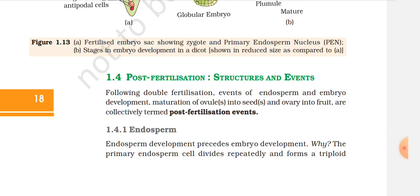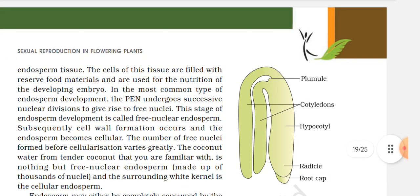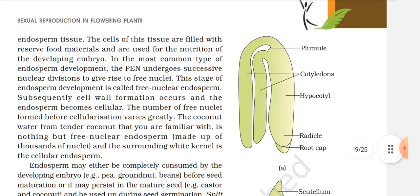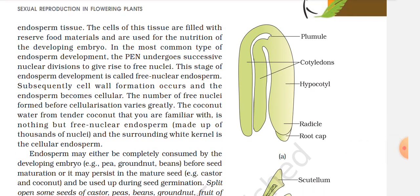1.4 Post-Fertilization Structure and Events. Following double fertilization, events of endosperm and embryo development, maturation of ovules into seed and ovary into fruit, are collectively termed post-fertilization events. 1.4.1 Endosperm. Endosperm development precedes embryo development. While the primary endosperm cell divides repeatedly and forms a triploid endosperm tissue, the cells of this tissue are filled with reserved food materials and are used for the nutrition of the developing embryo. In the most common type of endosperm development, the PEN undergoes successive nuclear divisions to give rise to free nuclei — this stage is called free nuclear endosperm.